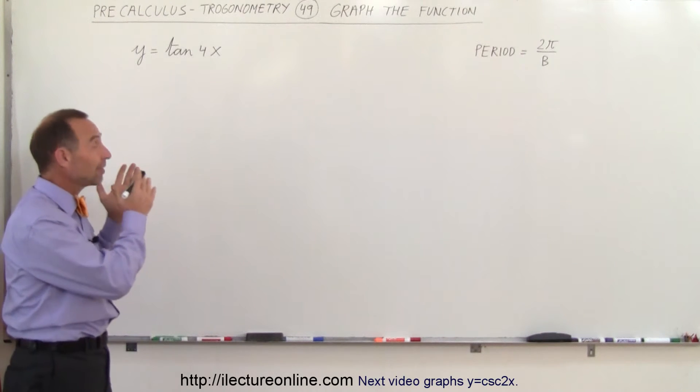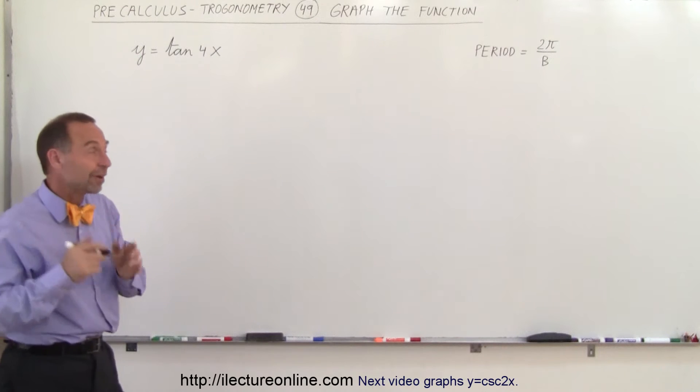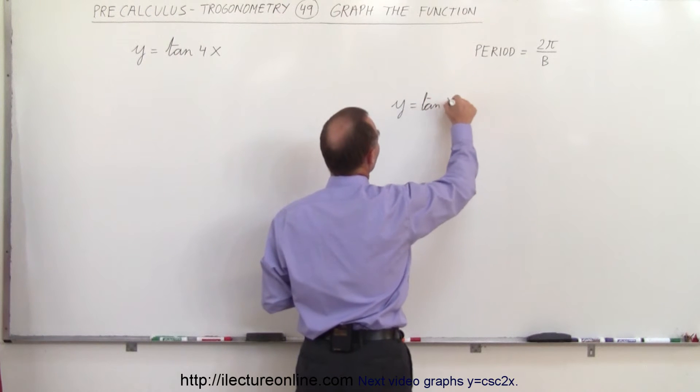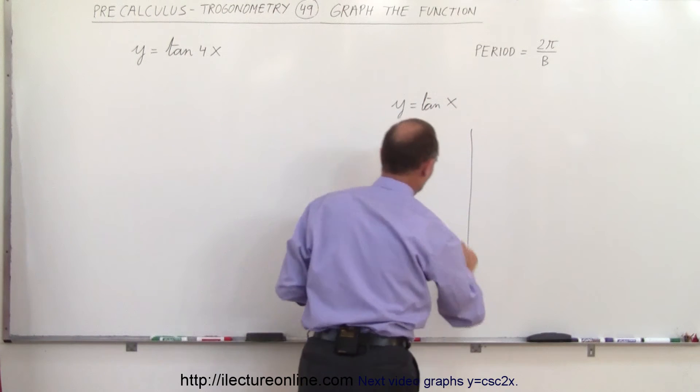In order to be able to graph the tangent of 4x, we should know what the tangent of x looks like. So let's graph that one first. So y equals the tangent of x, and the way that one looks is as follows.